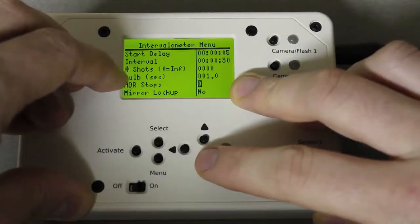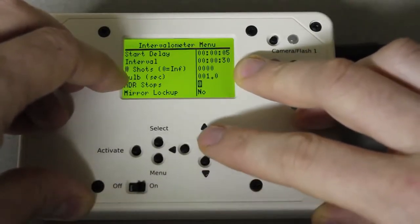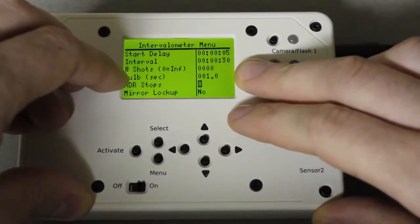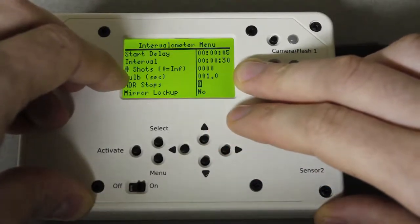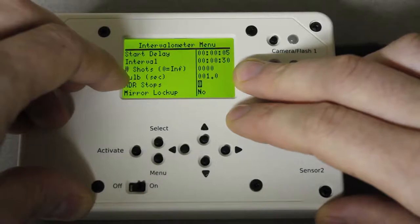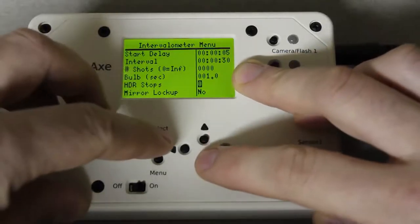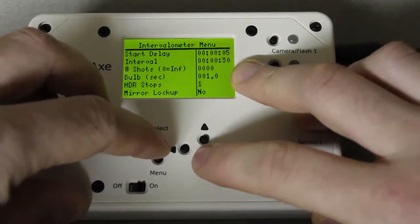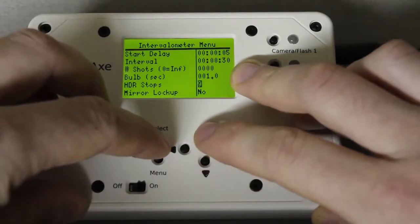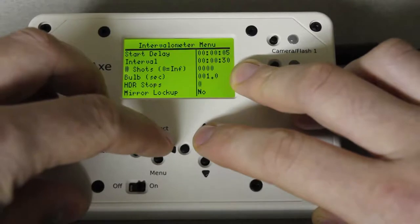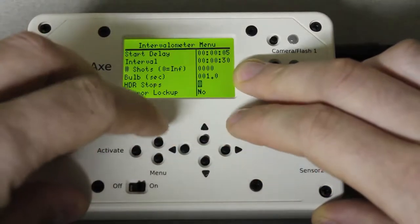HDR stops: this works in combination with bulb mode so it has to be a fairly low light situation where you can put your camera into bulb and 0.1 seconds is going to be the shortest duration. But what you can do here is you can control the number of stops and you can go from 0 to 9 stops. And this is the number of extra photos.